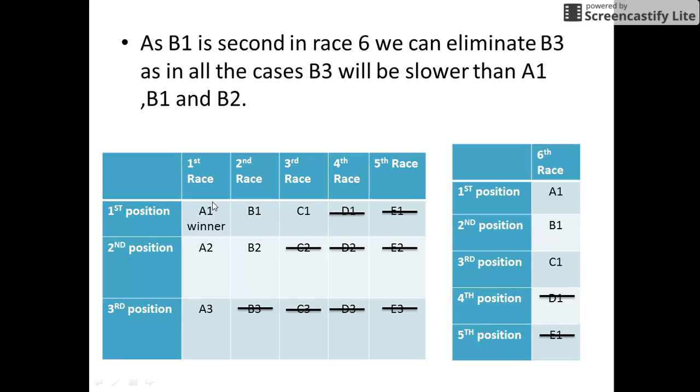We also know that from the sixth race, A1 is the fastest of all the 25 horses, so the remaining horses in contention for the second and third position are B1, B2, C1, A2 and A3.